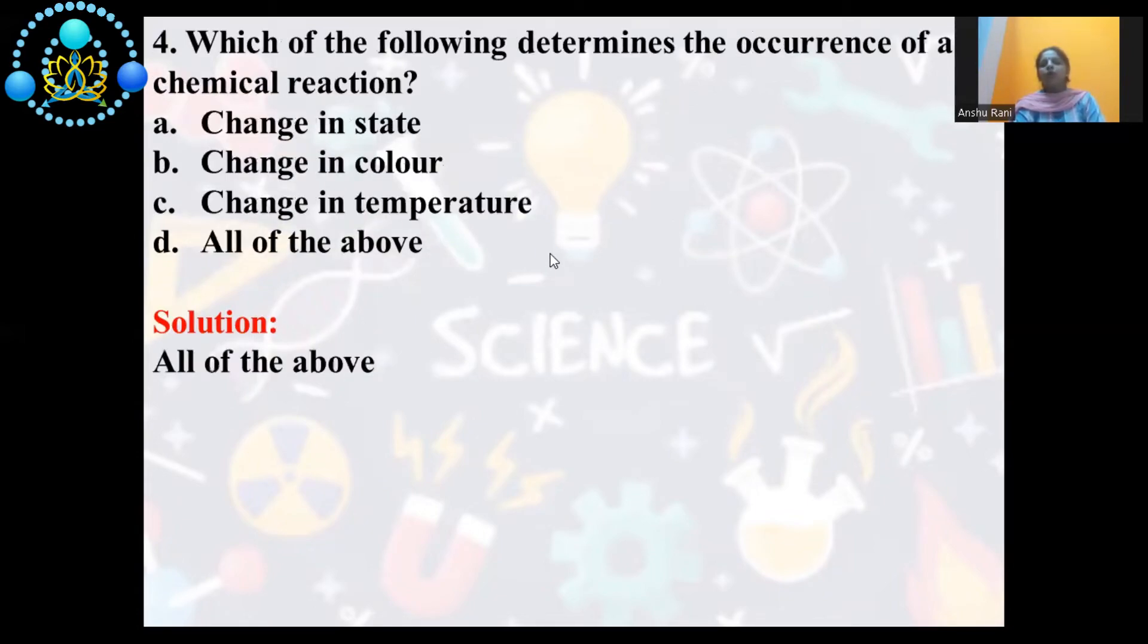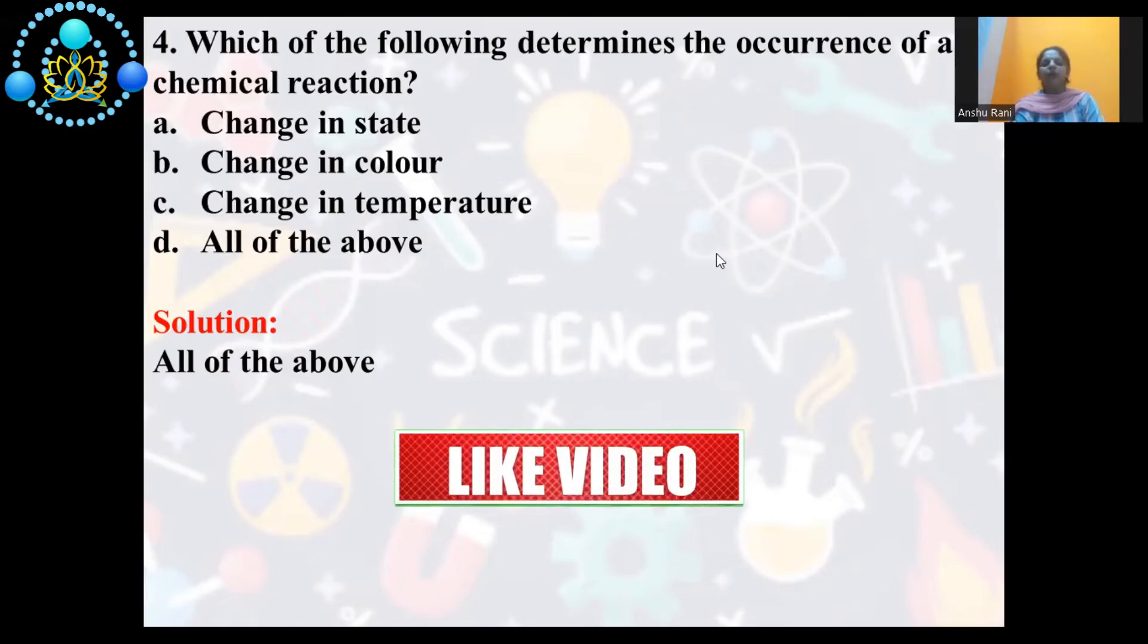Which of the following determines the occurrence of a chemical reaction? Yes, we know always in a chemical reaction, there can be state change, there can be color change, there can be temperature change. So, all of these options are correct.